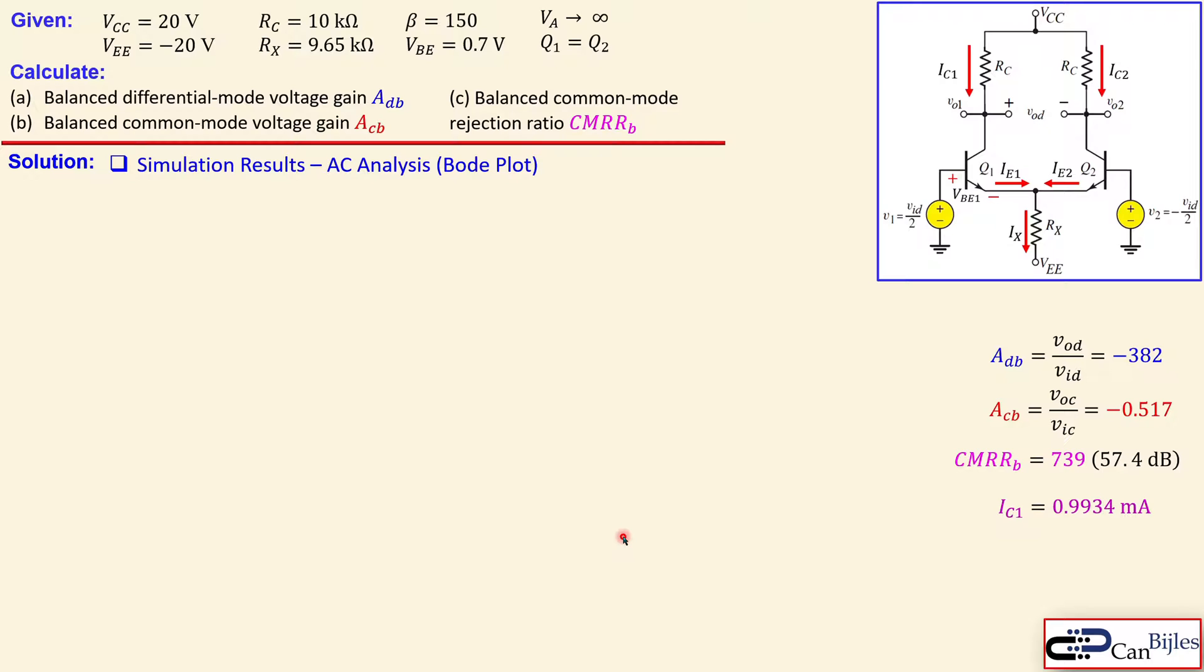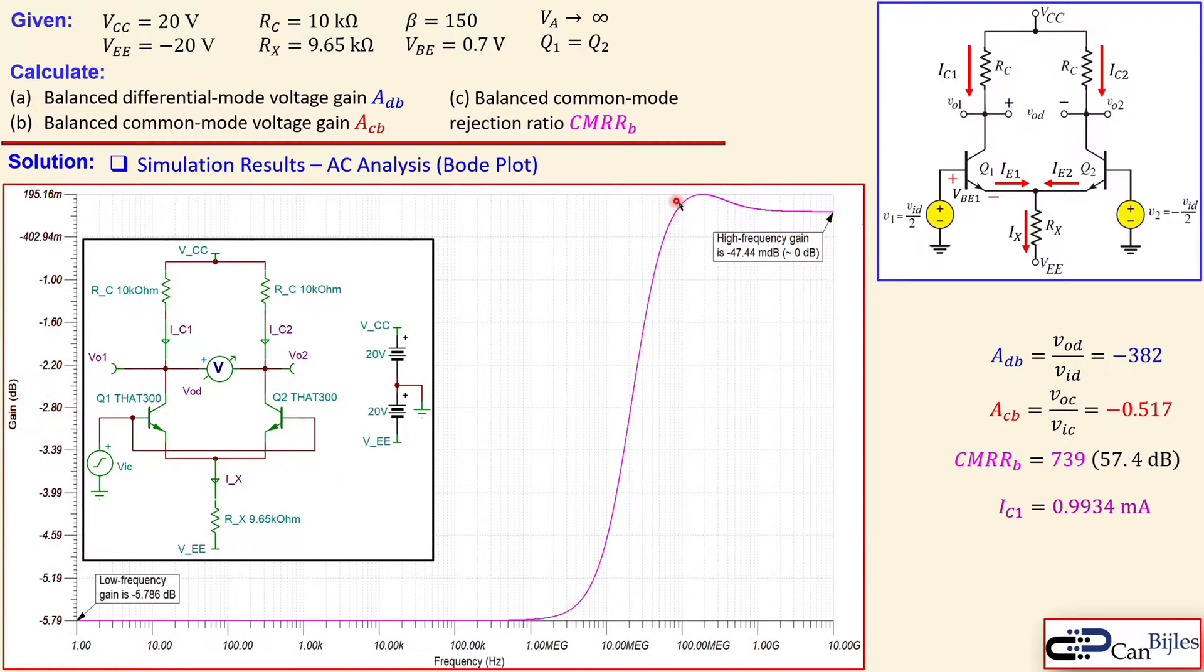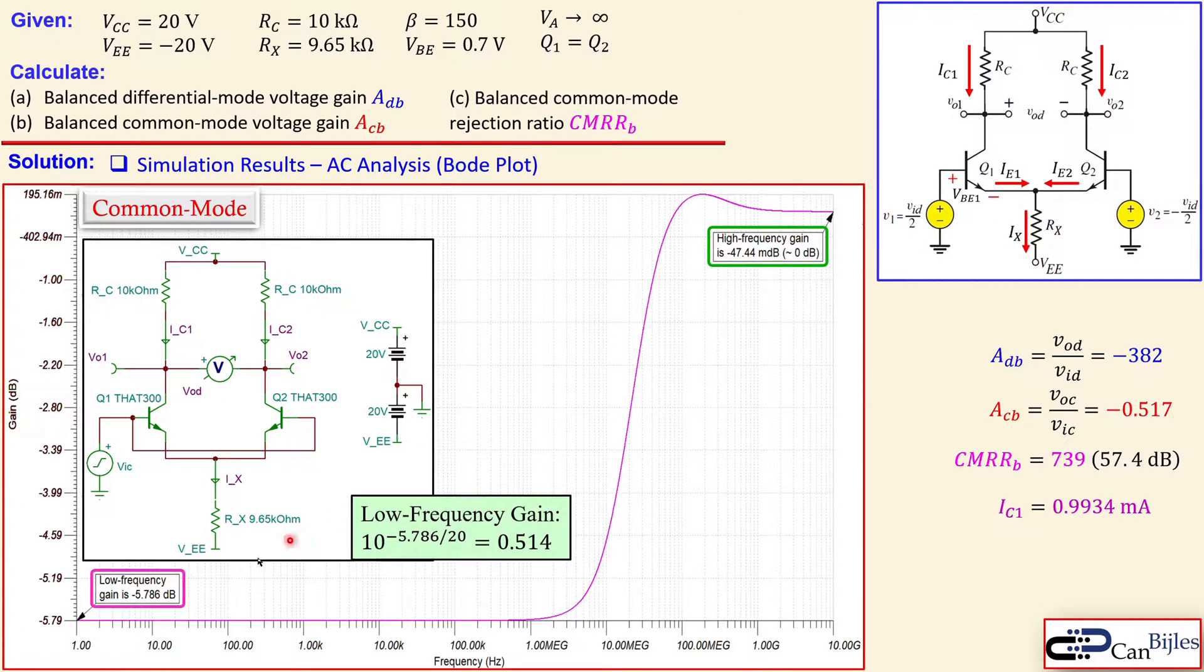Going to the AC analysis for common mode operation, there's a jump here due to high frequency effects we haven't discussed. This is the common mode operation circuit. You see the common mode input and you measure at one of the outputs, VO1 or VO2. This plot is specifically for VO1. What you see is that the low frequency gain is minus 5.786 dB. High frequency gain is approximately 0 dB. What you also see is that the low frequency gain converting from dB to scalar value will be 0.51 for absolute value. This is close to what we calculated. So this is also a very nice result.